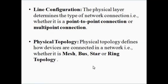The next function is determining the physical network topology — how the various devices in the network are connected together. There are four types of network topologies: mesh, bus, star, and ring. The physical layer determines which topology suits the network structure.